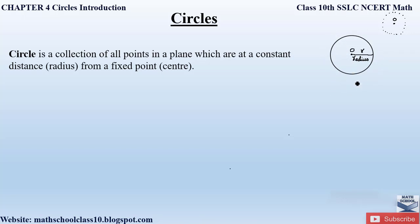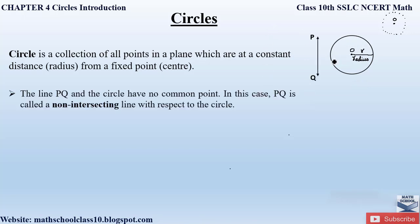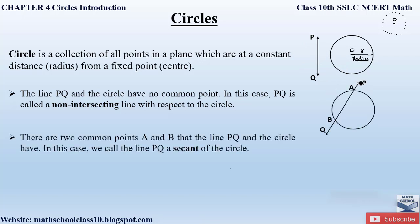Now let us see three conditions with respect to a circle and a line segment PQ. First, when a line segment PQ and a circle have no common point, PQ is called a non-intersecting line with respect to the circle. The second condition is when line PQ intersects the circle at two points A and B — in this case, the line PQ is called the secant of the circle.